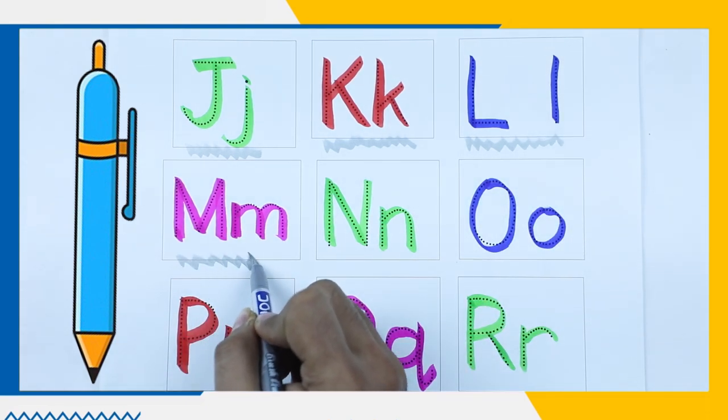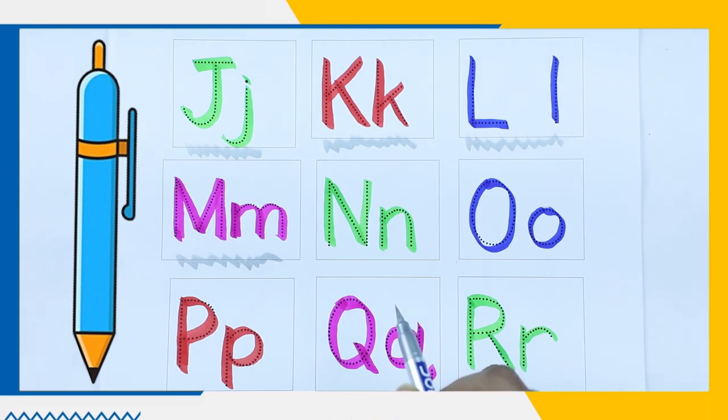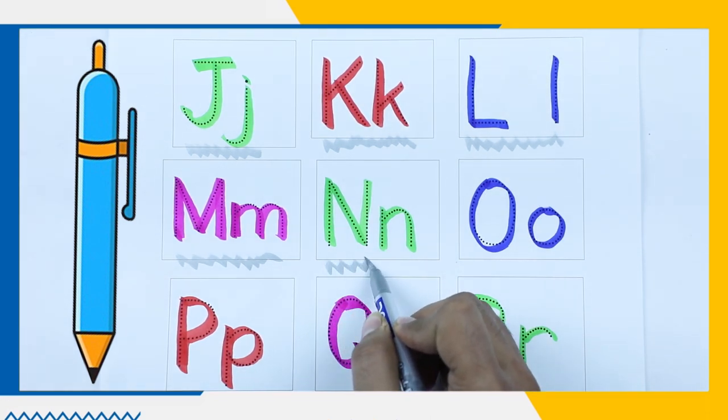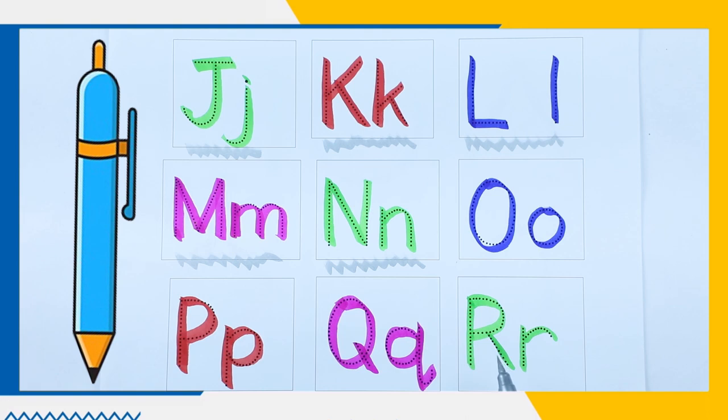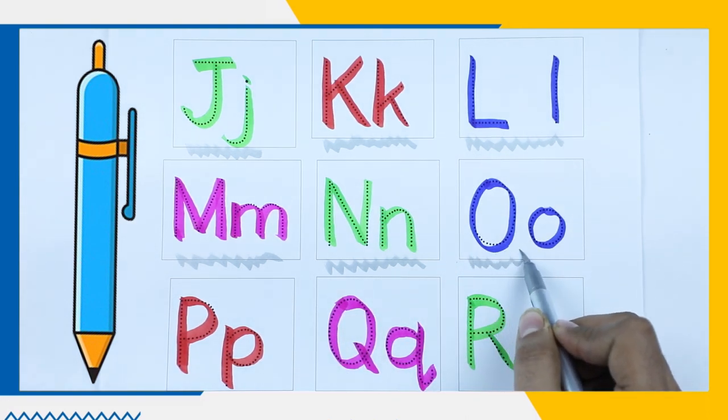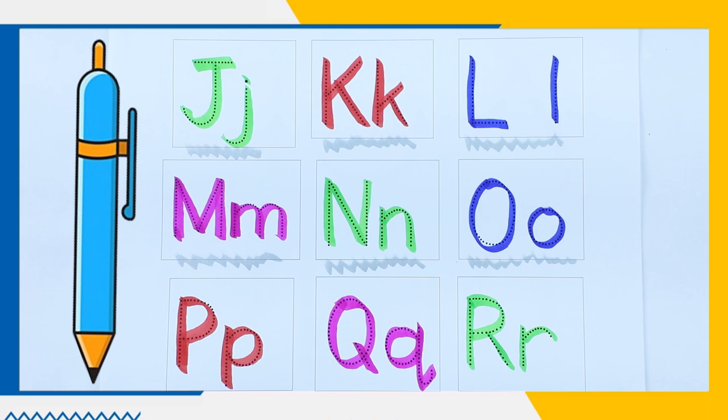M, M, M for monkey. It's a pink color. N, N for nest. It's a green color. O, it's a blue color.